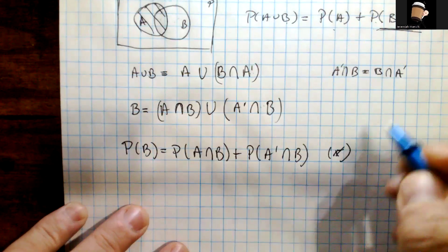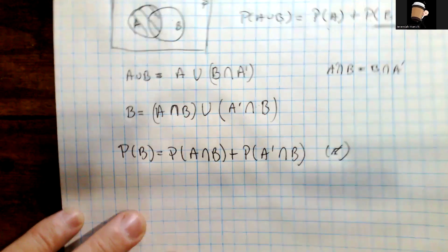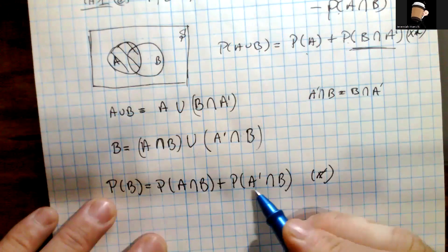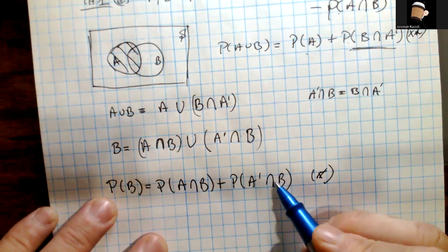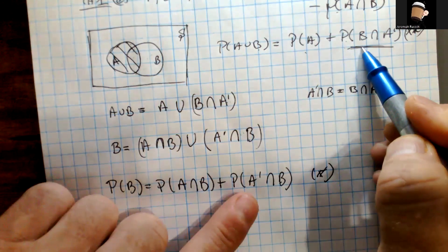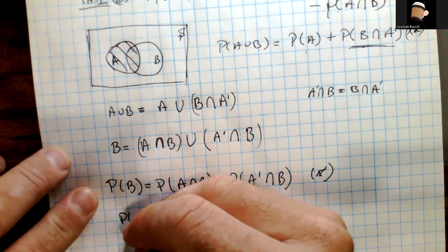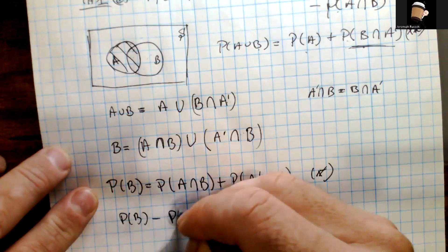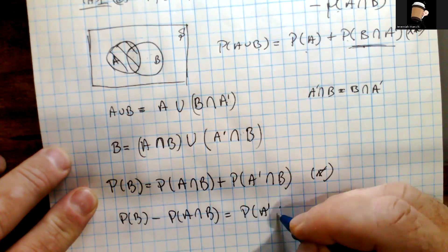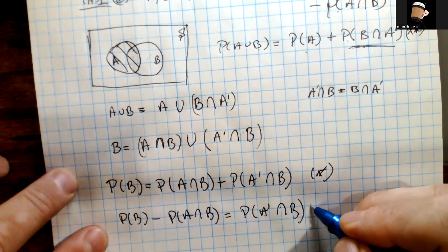Taking the probability of both sides — since this is a disjoint union — by property C we get: P(B) = P(A ∩ B) + P(A-complement ∩ B). I'll call the earlier equation star and this one double-star. Now I'm going to solve star for P(A-complement ∩ B): P(B) − P(A ∩ B) = P(A-complement ∩ B).